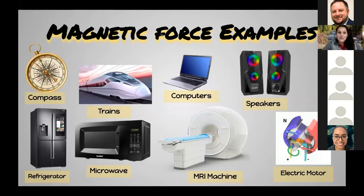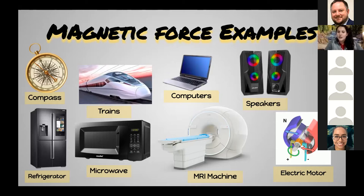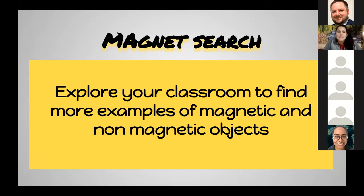Some examples of magnetic force in real life include compasses, which we've discussed. Certain trains called maglev trains use magnets on the bottom and on the tracks to propel them, using both repelling and attraction to make the trains move forward. Computers, speakers, and other technologies use magnets, as do electric motors and MRI machines. When you go to the doctor, those machines use magnets inside. Even in your kitchen, appliances like your refrigerator and microwave all use magnet technology.